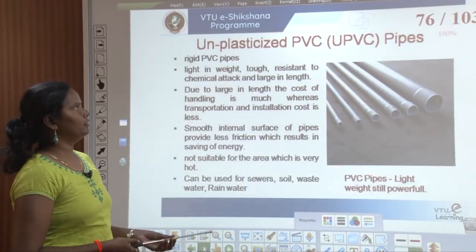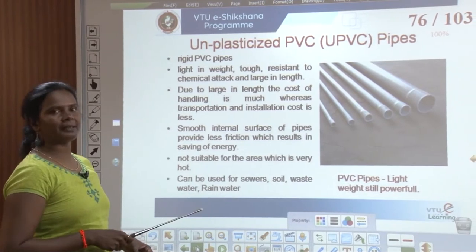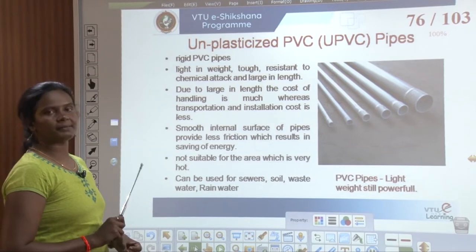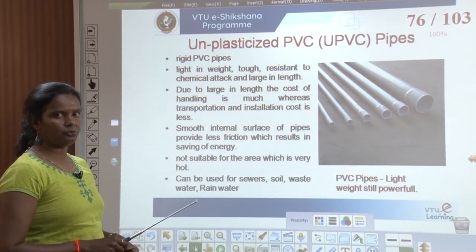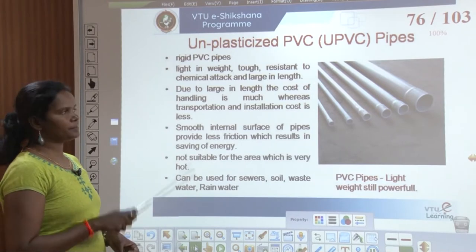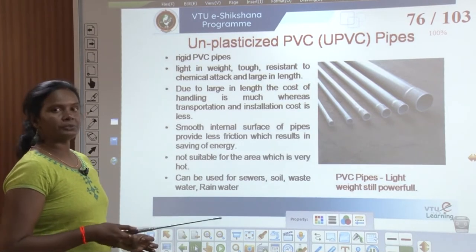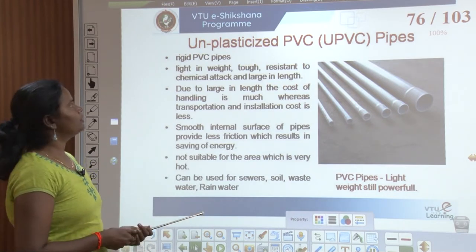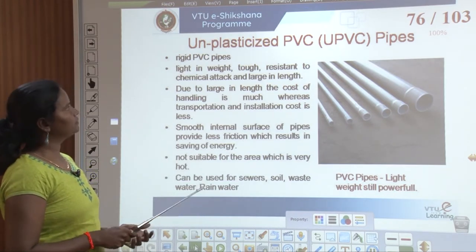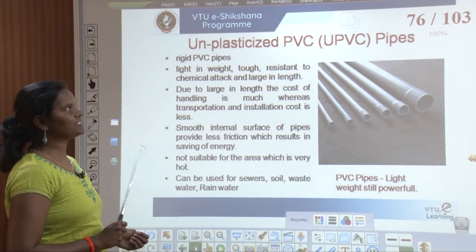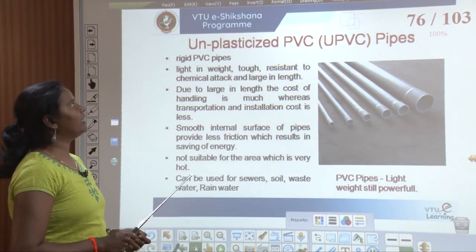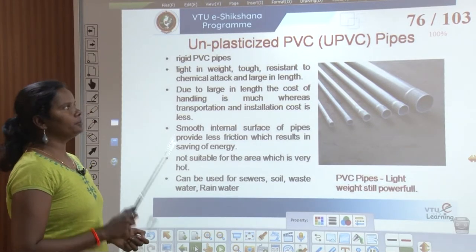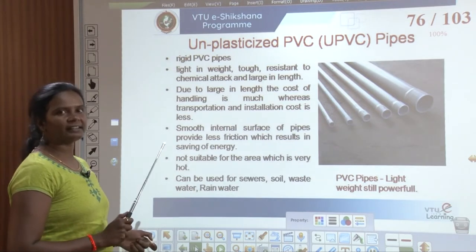We have briefly covered different types of pipes in module 2. But in this particular presentation, what is used in the building is what I am explaining now. So we will go through unplasticized PVC pipes. These are called UPVC pipes. UPVC pipes are very rigid.